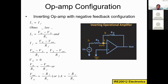Based on KCL, I1 is equal to If — the input current equals the feedback current. This is our first assumption. Now we will apply Ohm's law to find I1. We know V = IR; as an electrical student you should remember this. So I = V/R — the current in a branch equals the voltage divided by the resistance in that branch.